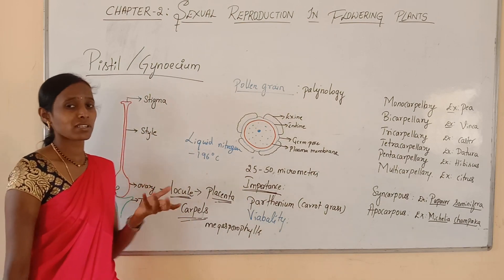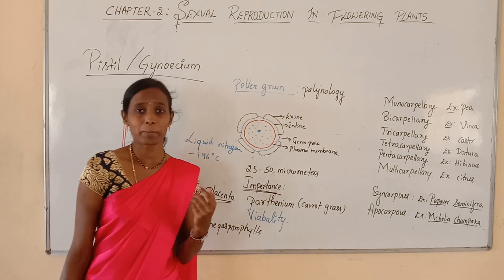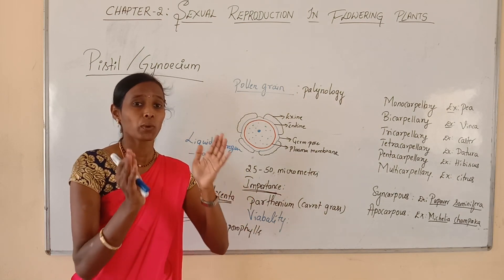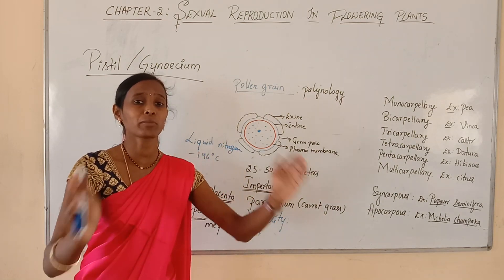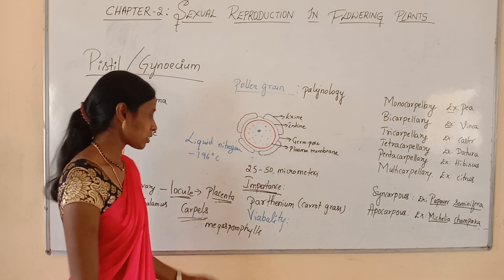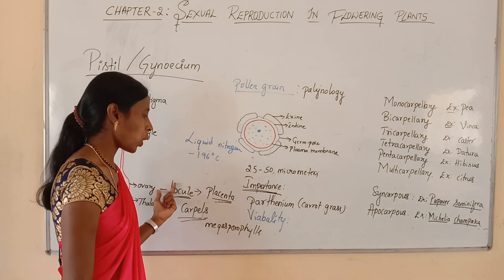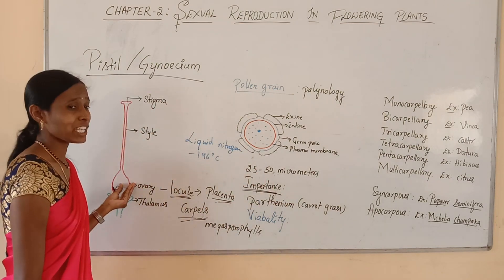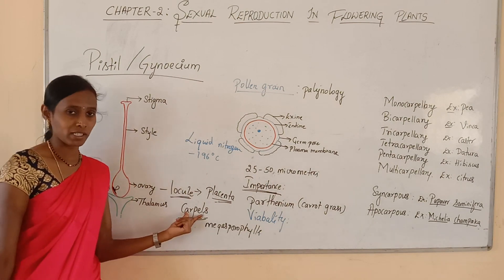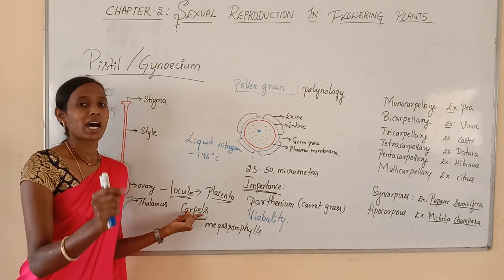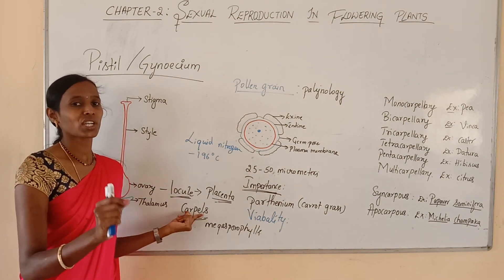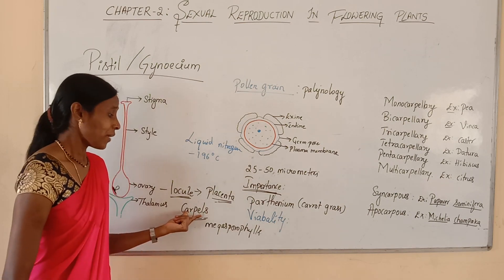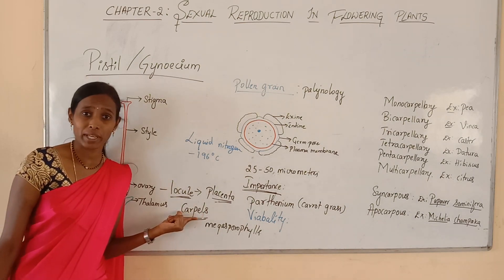When there are many ovules, examples include papaya and watermelon, where one ovary contains many ovules. A gynoecium may comprise one to many structural units — carpels — and the number of carpels is greatly variable.